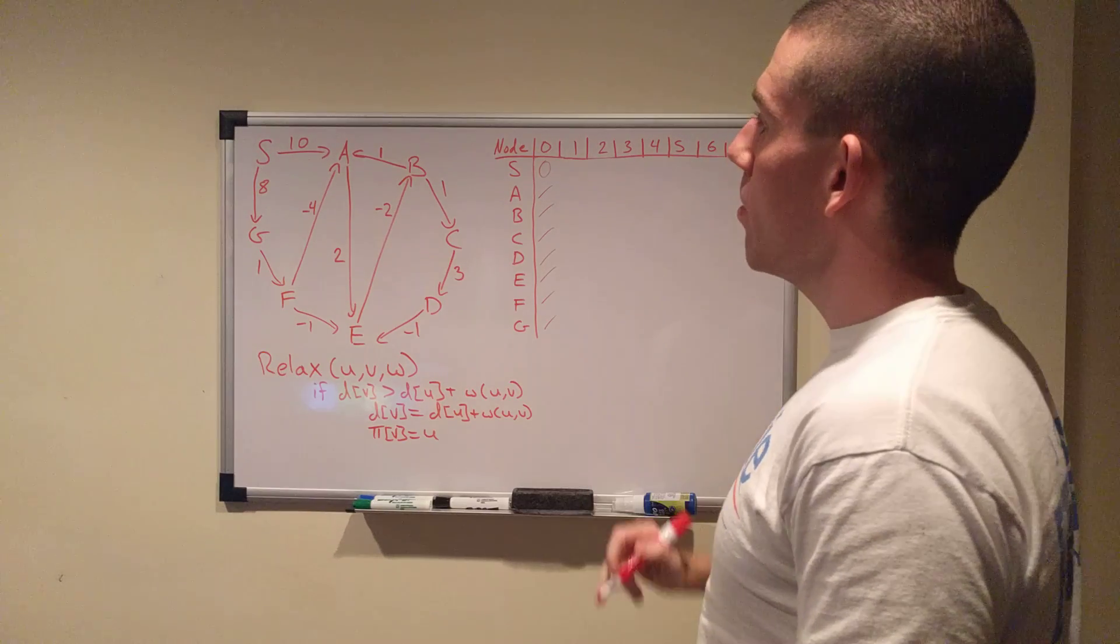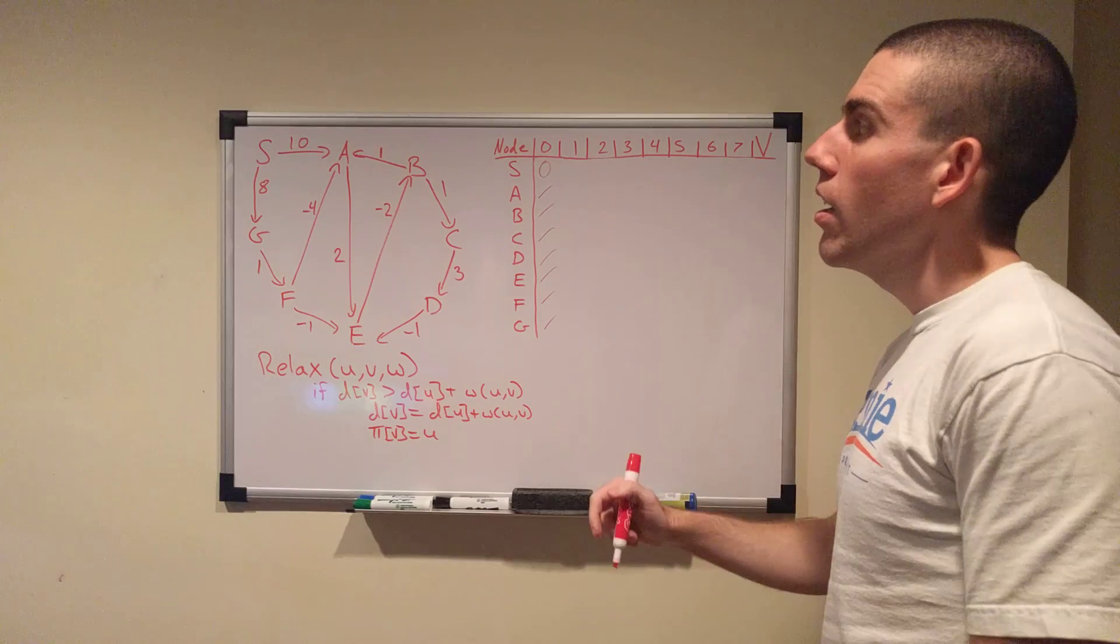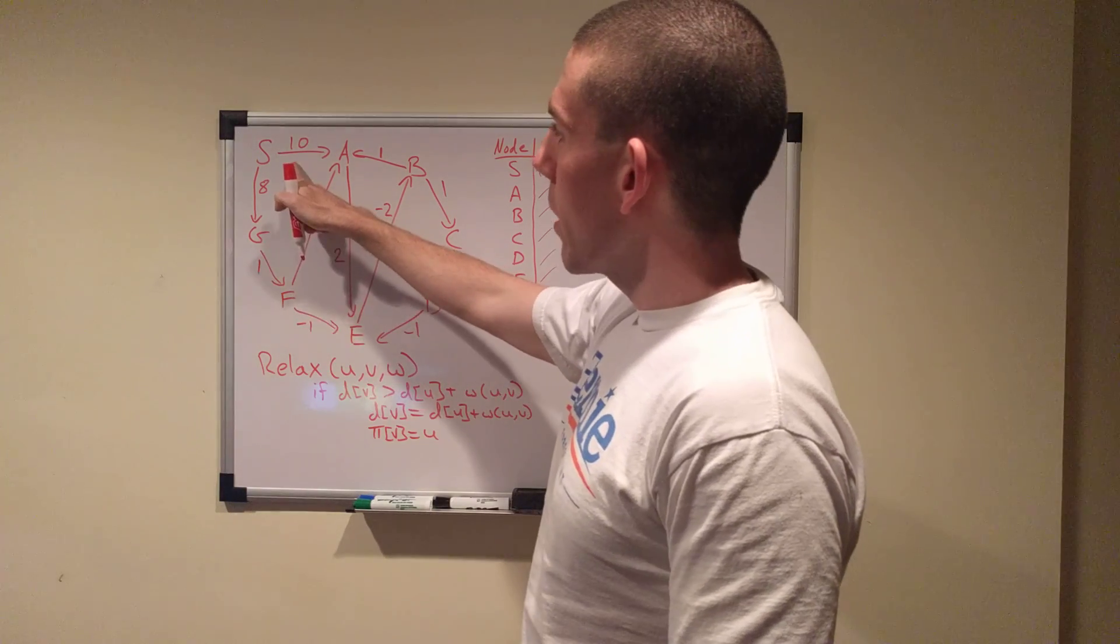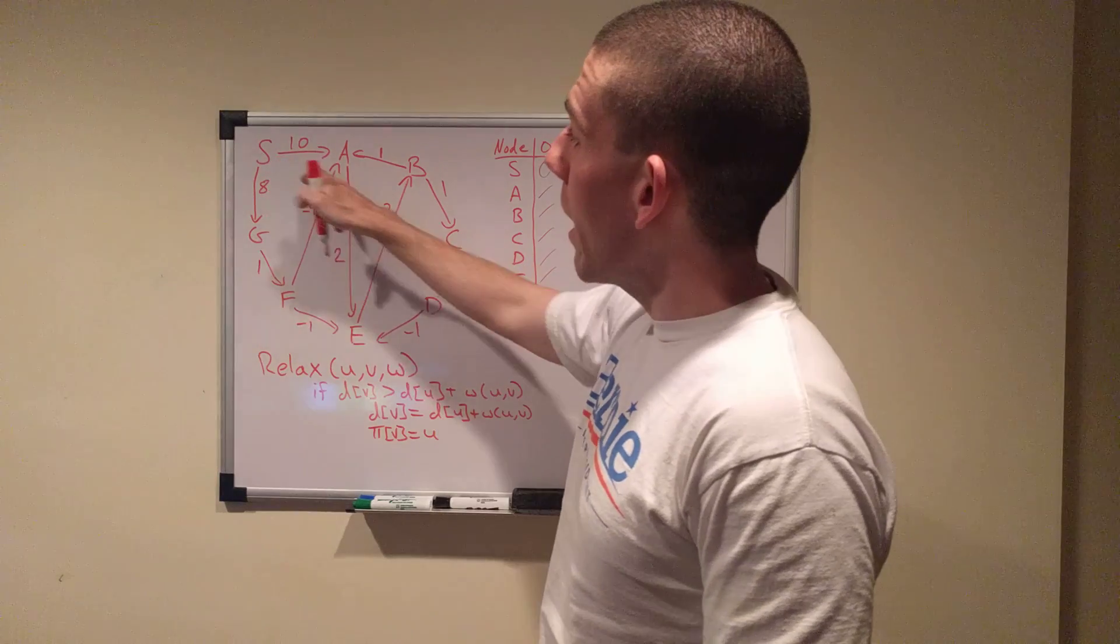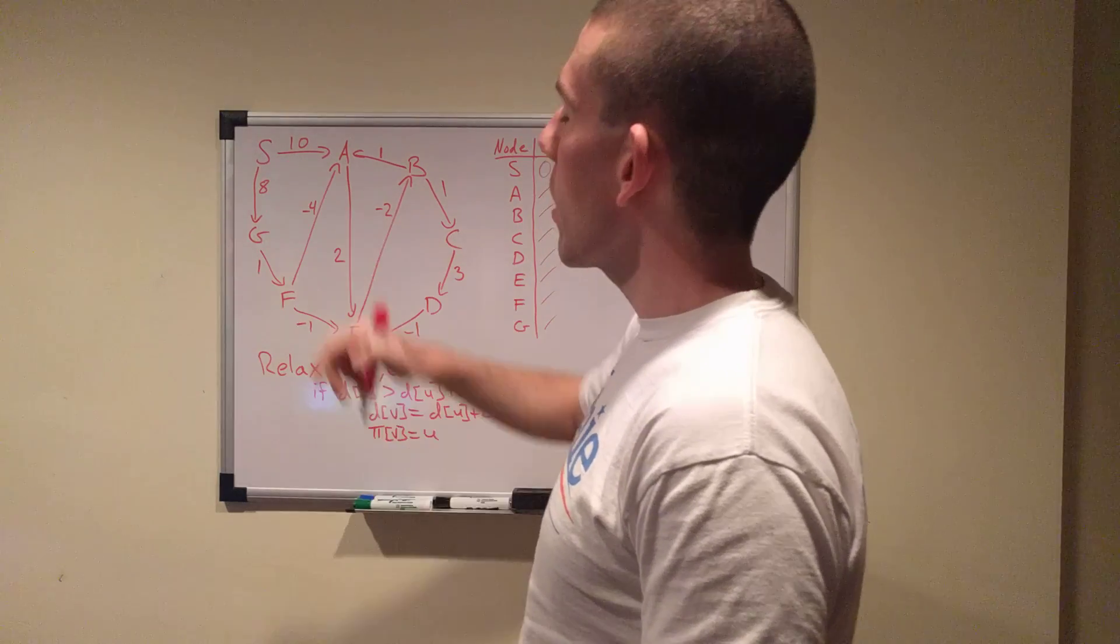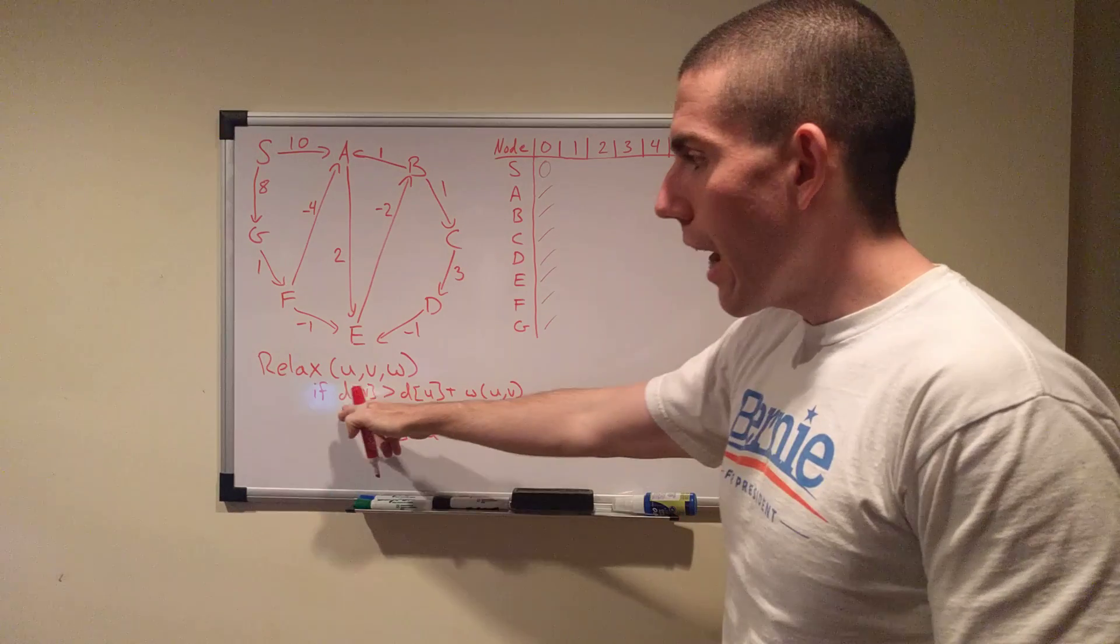So that's our zeroth step. Now for the first iteration, first thing we're going to do is we're going to relax our first node S, which means that we're going to check to see for its outgoing edges. It has two outgoing edges. So it goes to A at a cost of 10. Okay, so what is the current cost of A? Relax will ask, what is the current cost of A?